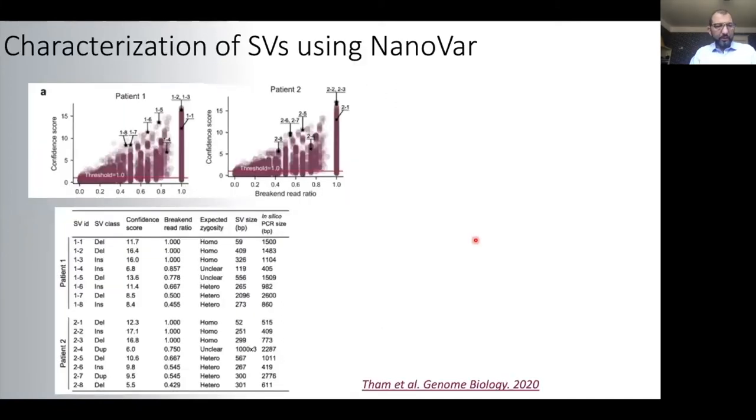Then we tested NanoVAR on AML patients. In this chart, we have listed all structural variants ranked by the neural network confidence score on the y-axis and the zygosity score on the x-axis. NanoVAR outputs also a detailed list of structural variants as shown here in this table. So this is just a sample of all the structural variants.